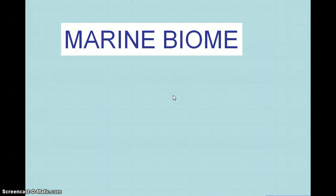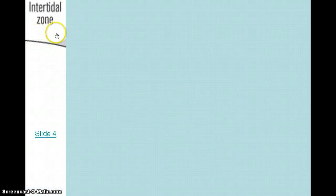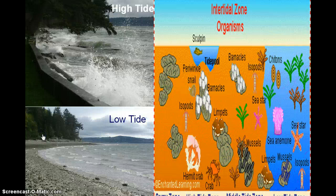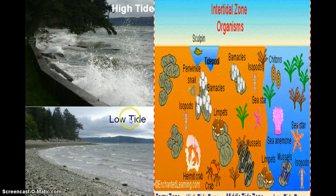Our focus is on the marine environment. It's kind of hard to visualize, so pretend we're looking at the ocean horizontally. The first zone is called the intertidal zone, where you have tides. Organisms found in this zone will be our drifters or plankton: phytoplankton, zooplankton, and ultraplankton.